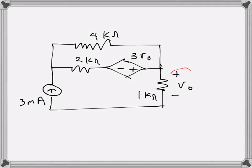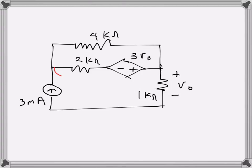I want to find the voltage V0 in this circuit. This is a control voltage for this voltage-controlled voltage source. I will use the source conversion method to do that. First, I will convert this voltage source and series resistance into a current source and a parallel resistance.